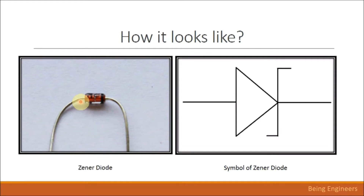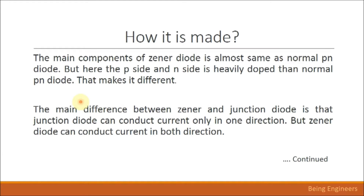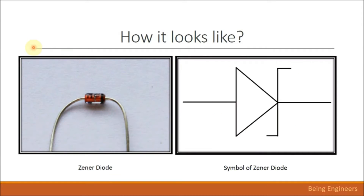So how is a xenon diode made, and how is it different from a normal diode? A xenon diode is almost the same as a normal PN junction diode, where P-type and N-type semiconductors are doped to form the junction. But in the xenon diode, the P-type and N-type are heavily doped. The main difference is that a normal junction diode can conduct current only in one direction — the forward bias direction.